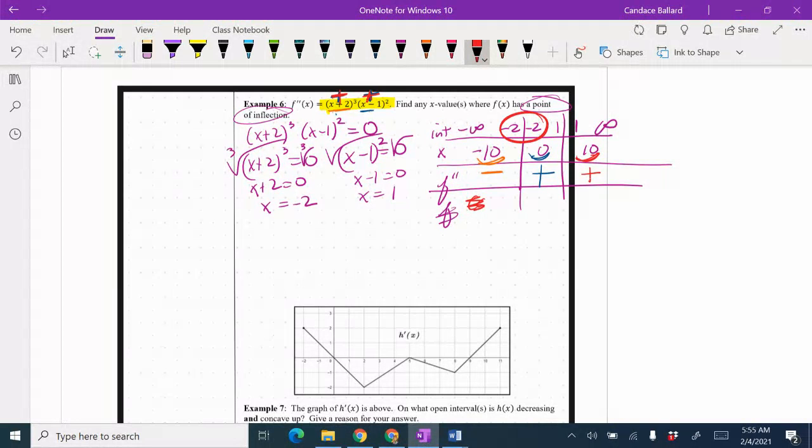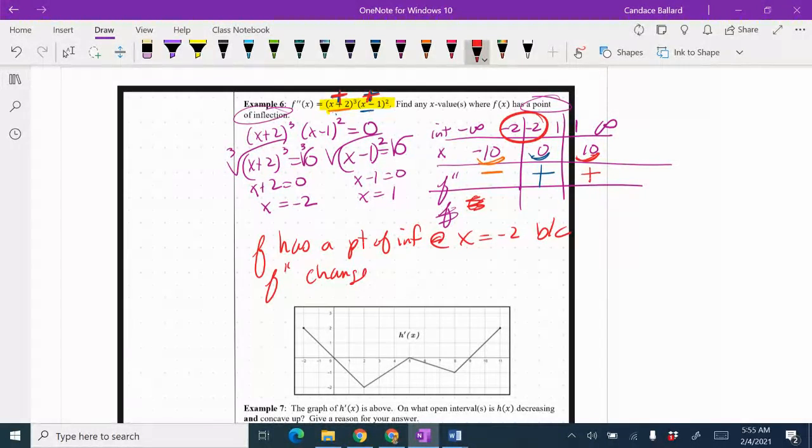So we would say that f has a point of inflection at x equals negative 2 because f double prime changes sign at this point.